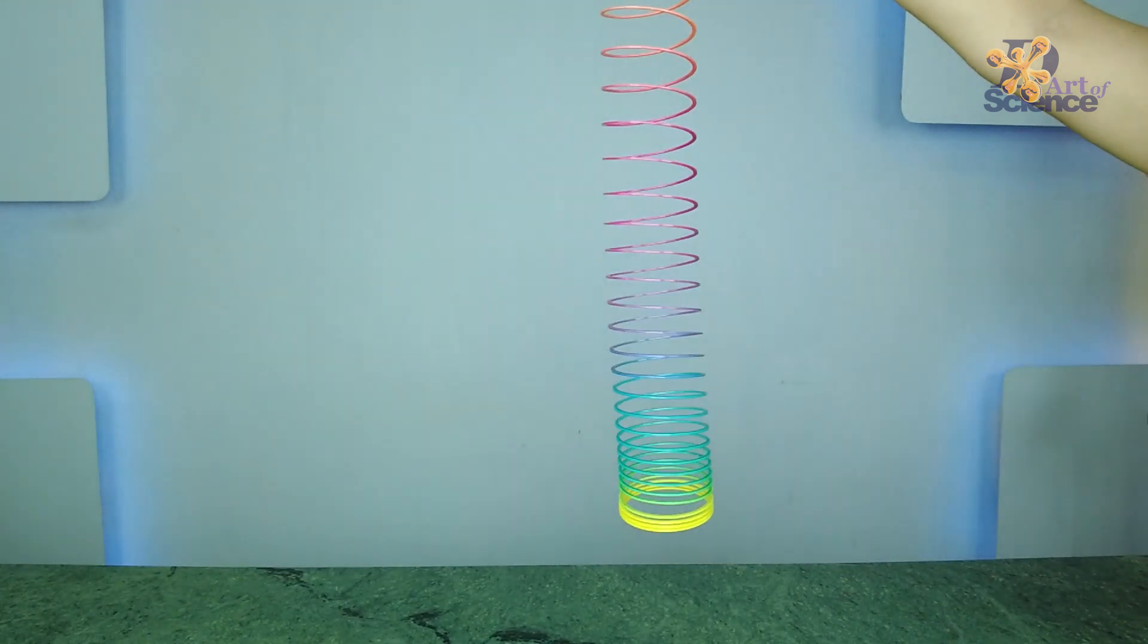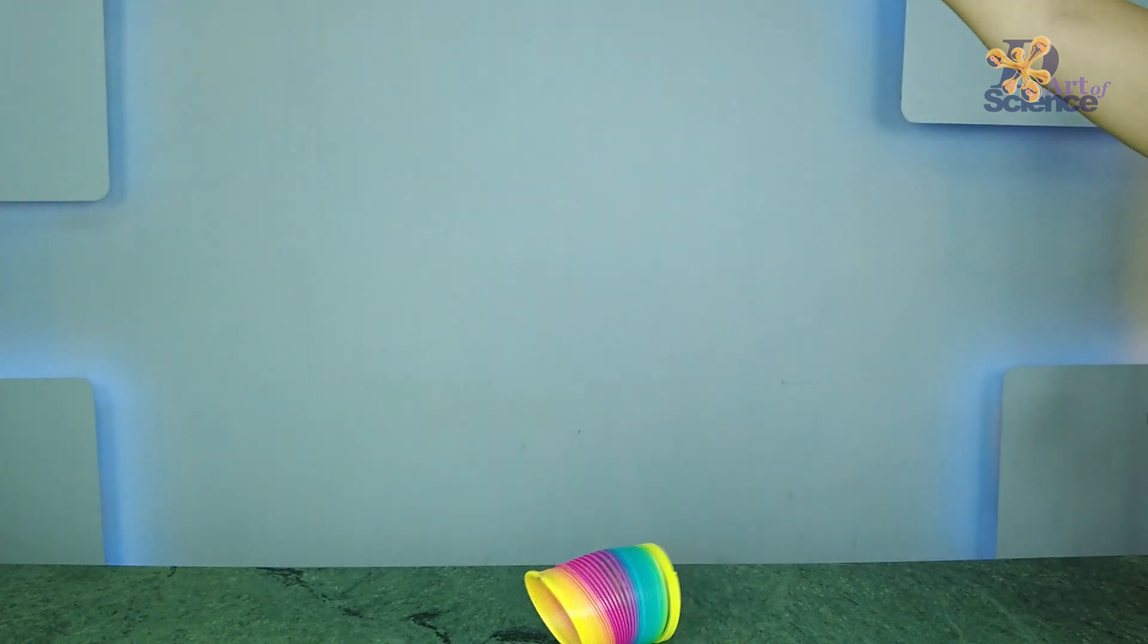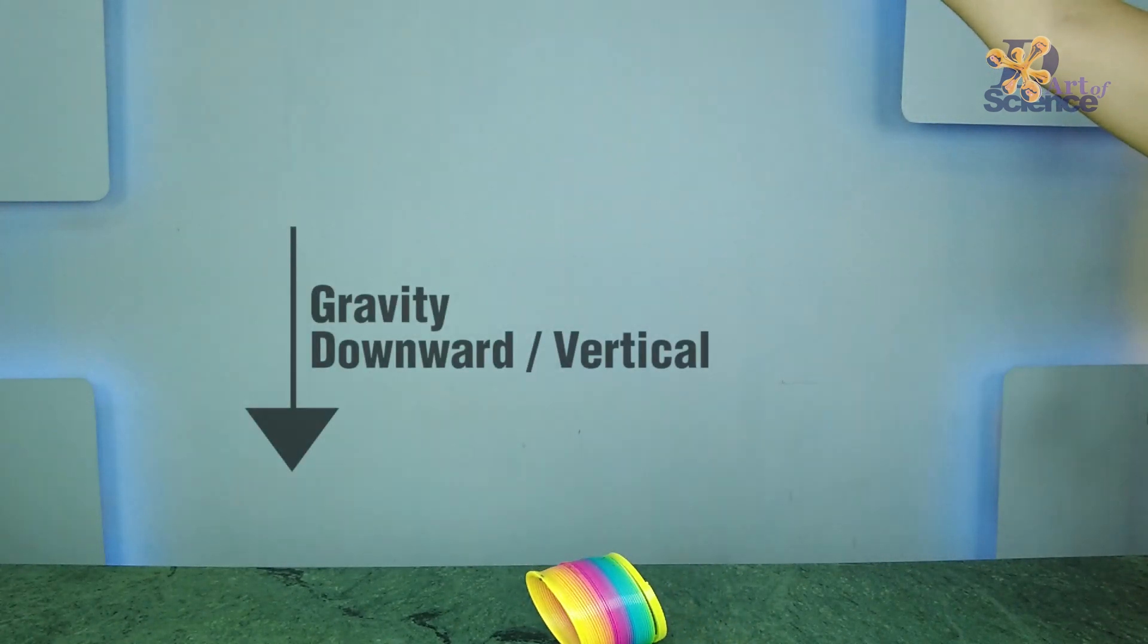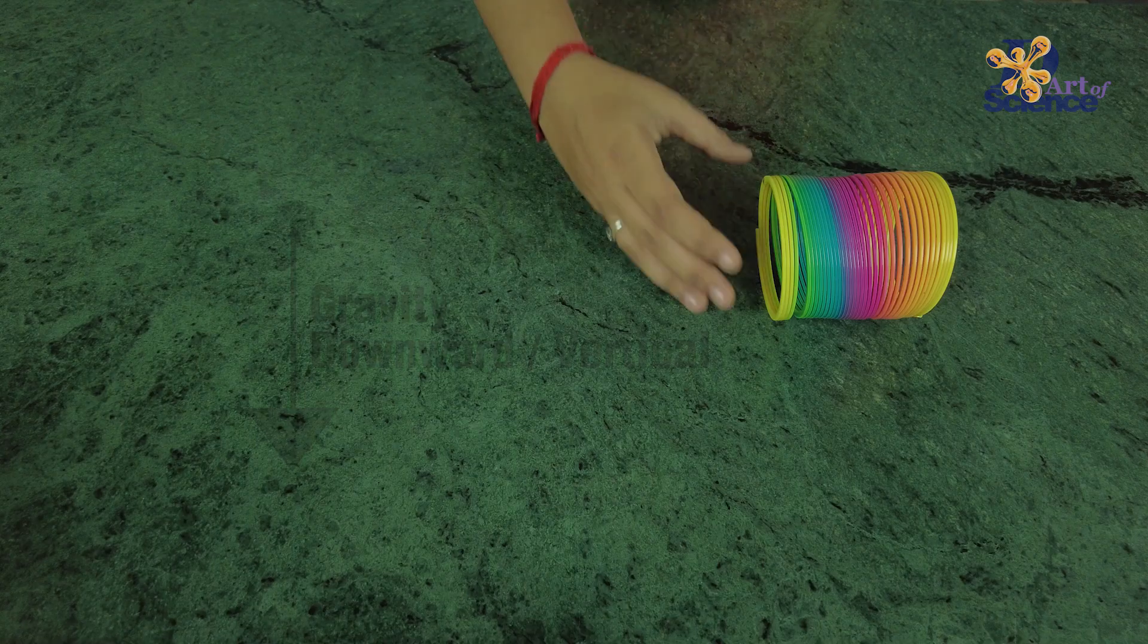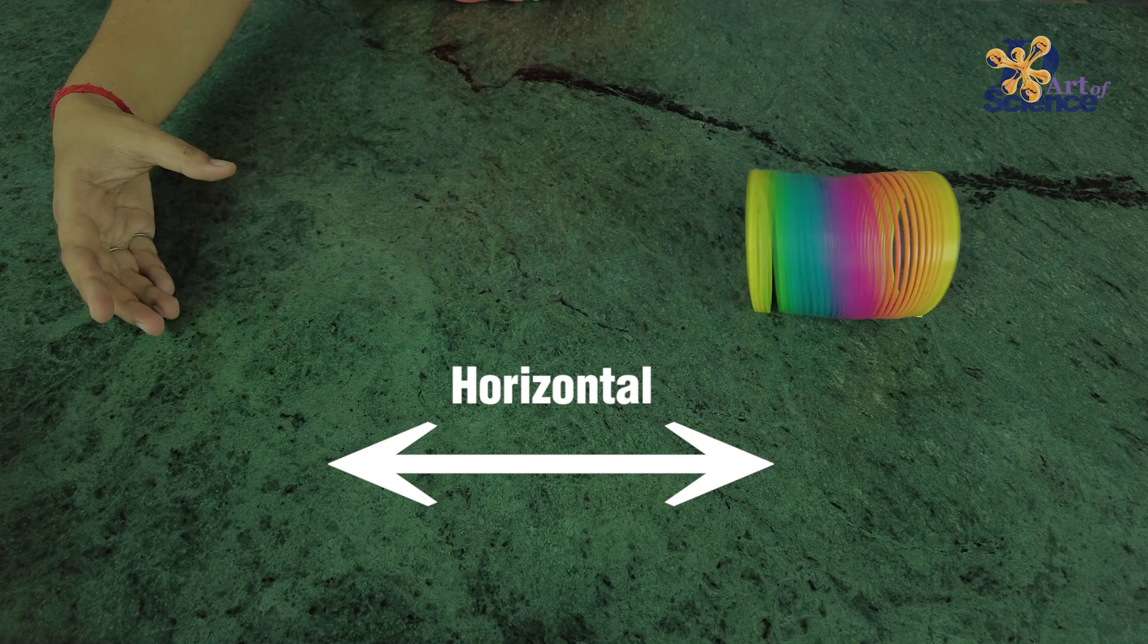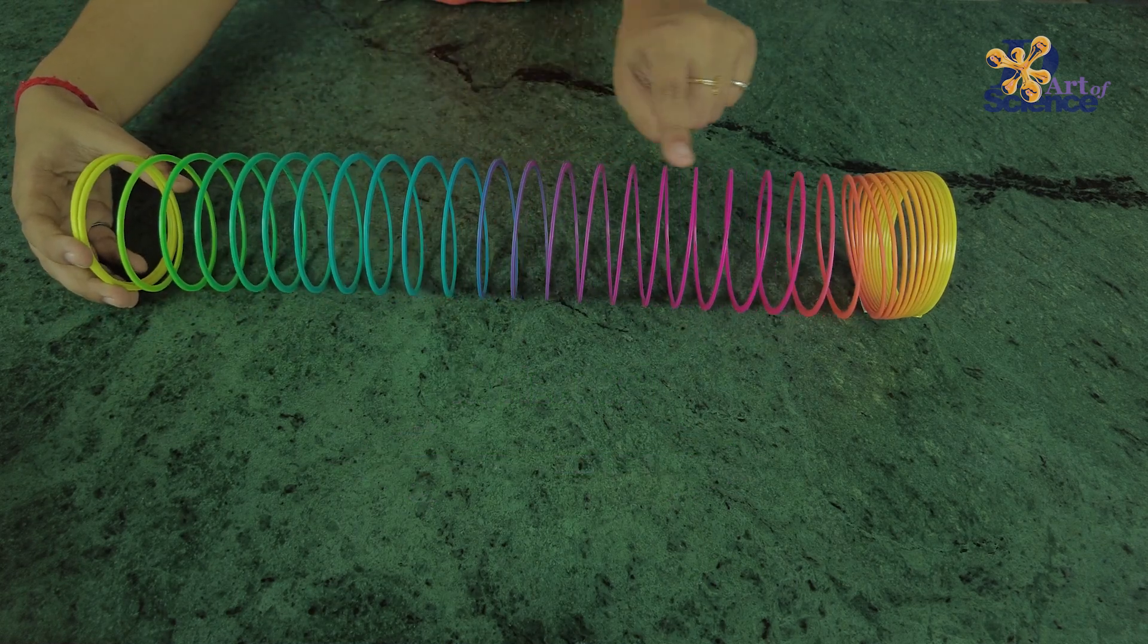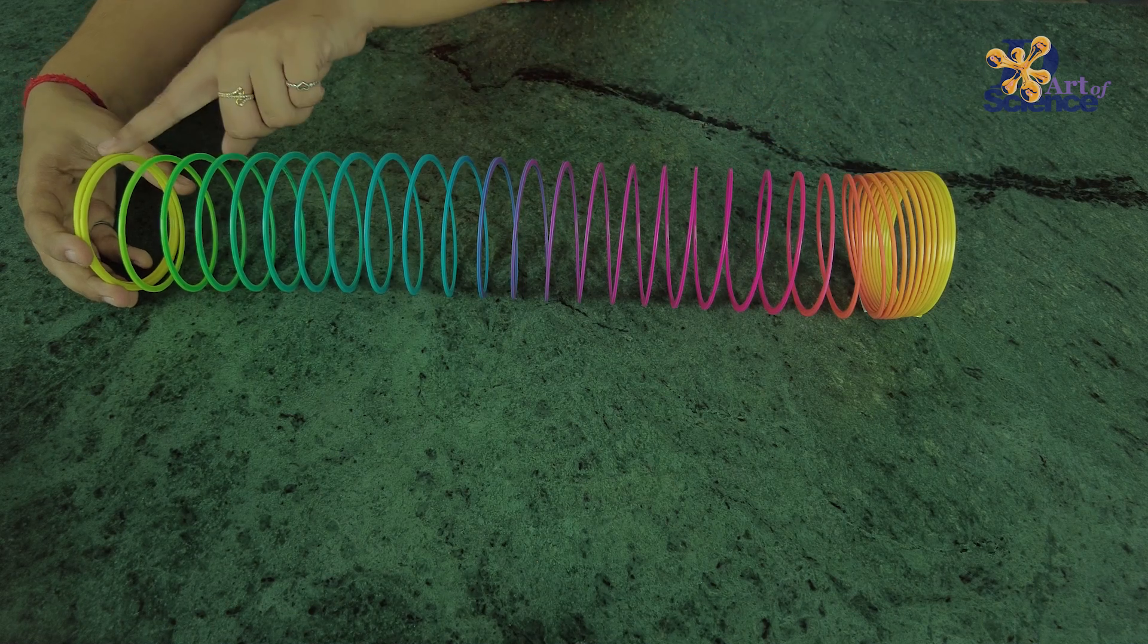So why does gravity work differently here? Gravity acts in the downward or the vertical direction. When the slinky is on the table it is in a horizontal plane and there is no gravity acting in the direction of the slinky. So when it's extended, the tension within the slinky as we saw earlier pulls the two ends closer.